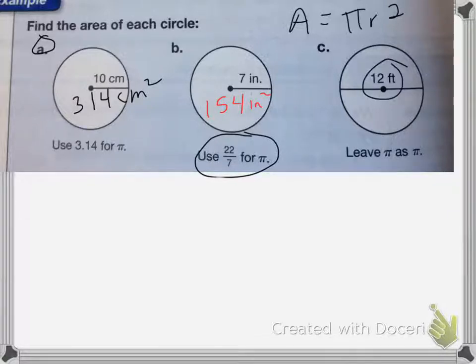I have 12 feet for my diameter, I just need the radius. So since the radius is half of the diameter, it means my radius is going to equal 6 feet.